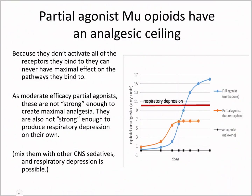Let's remember what happens with a partial agonist. With a full agonist, you increase the dose and you increase the response until you reach a point where all the receptors are occupied — that's our Emax. With a partial agonist, you also increase the dose and get an increasing response, but then you level out at a much lower effect because they're not activating all of the receptors they're bound to. Technically, with full agonist opioids, you can keep getting increased analgesia as you increase your dose all the way until the opioid causes respiratory depression and death. So there's no ceiling on the analgesia because you can always get more until the patient stops breathing.